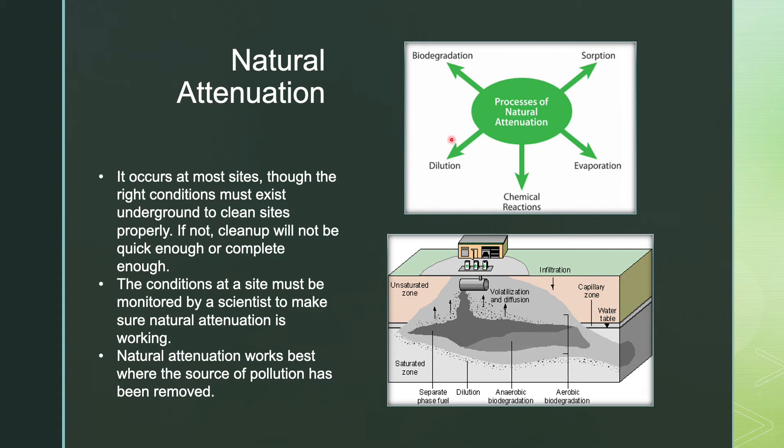The fourth one is evaporation, and evaporation causes some contaminants like gasoline or industrial solvents to change from liquids to gases within the soil. And then if these gases escape to the air at the ground surface, air will dilute them, and then the sun will actually destroy them. And then the fifth one is chemical reactions. So chemical reactions react with natural substances underground that may convert these contaminants into less harmful forms.